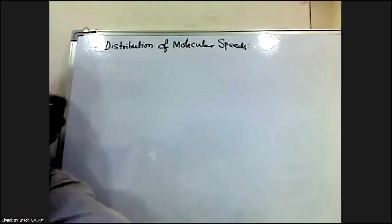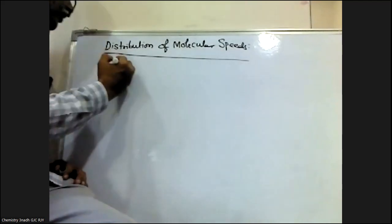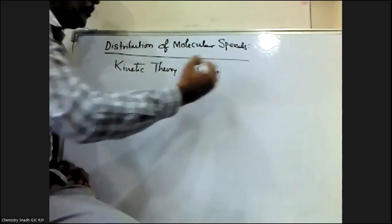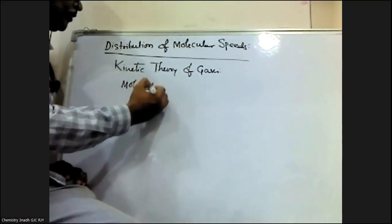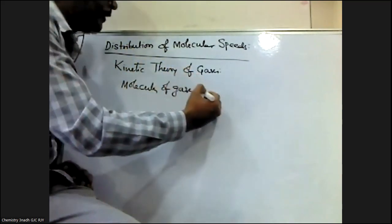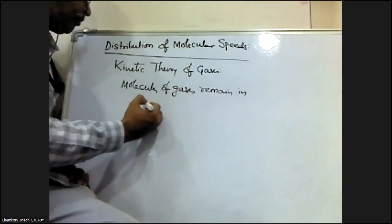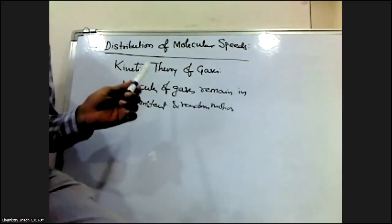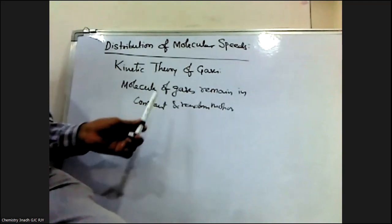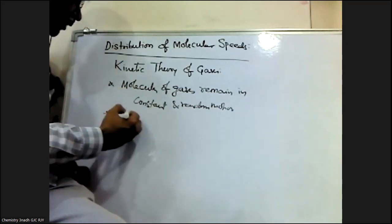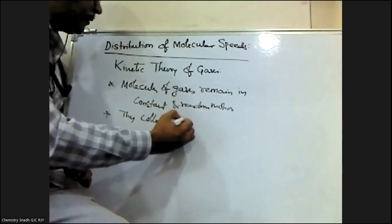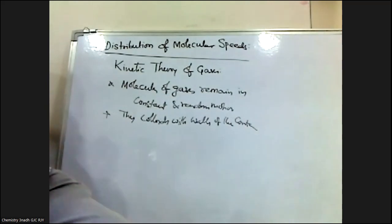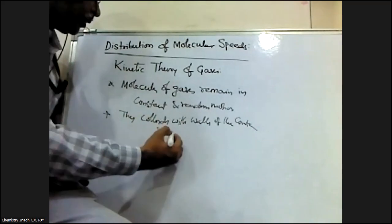So, distribution of molecular speeds. From kinetic theory of gases, we know that molecules of gases remain in constant and random motion — that is, the molecules of gases are always continuously and randomly moving in all directions. While moving, they collide with other gas molecules and with the walls of the container.